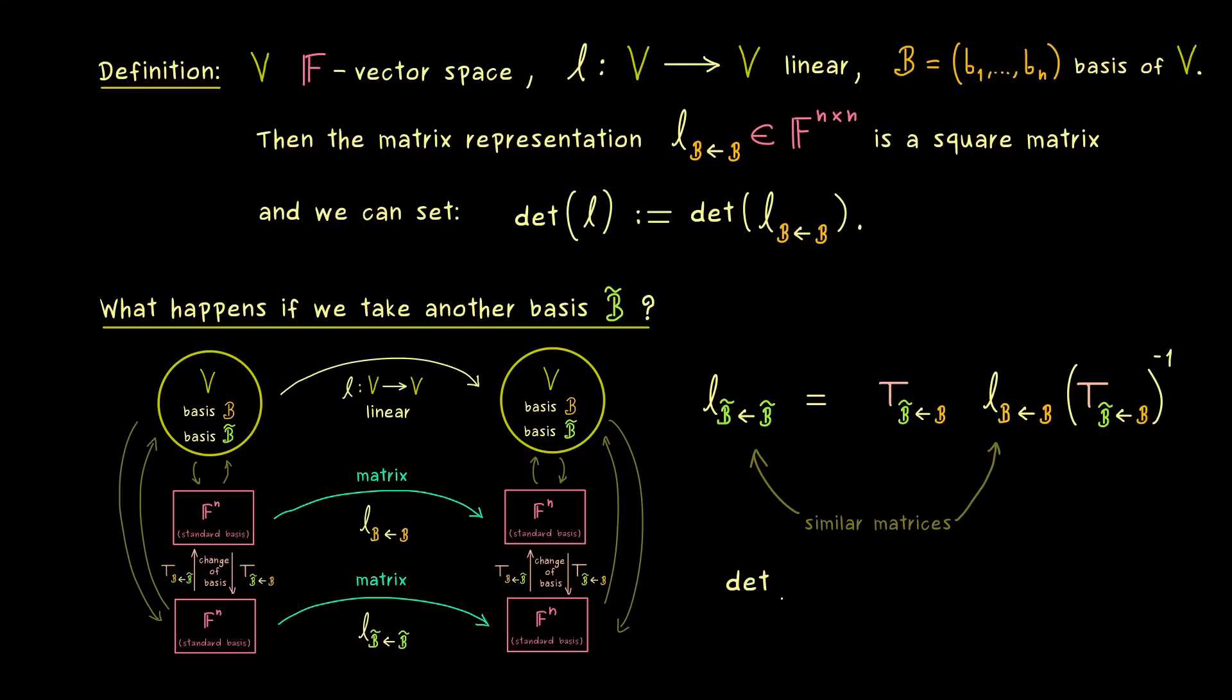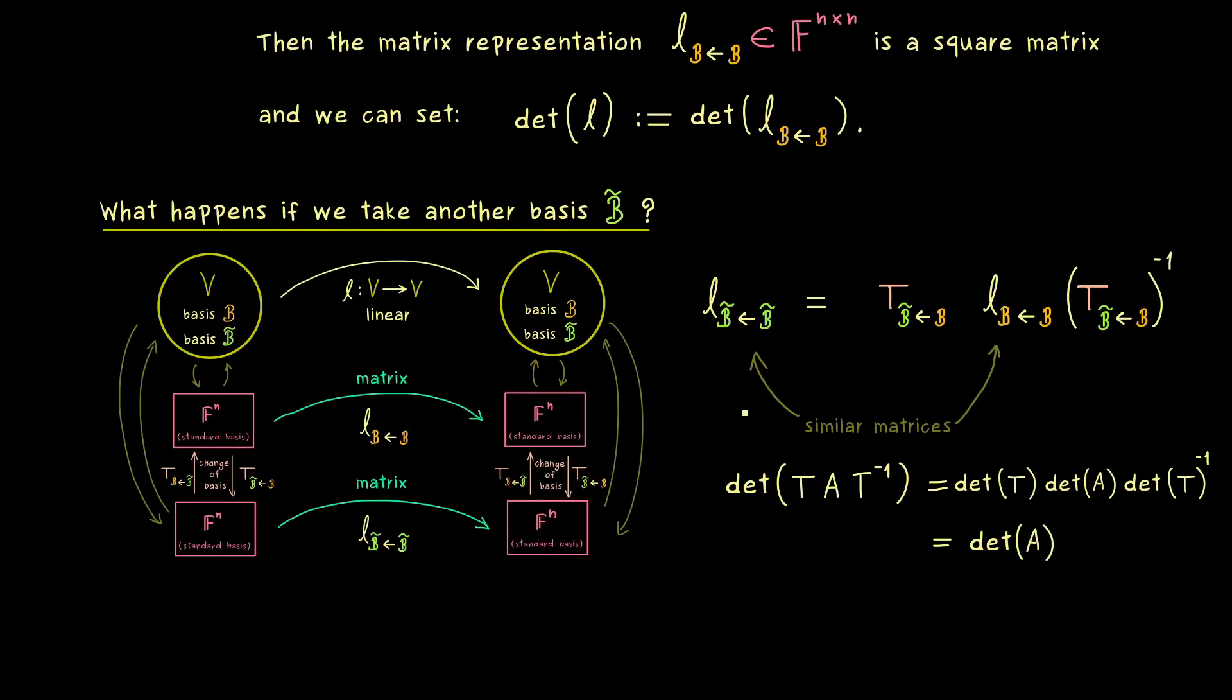Indeed, this just follows from the fact that the determinant is multiplicative. So a product of the form TAT inverse can be split up into three determinants. And the last one for T inverse can also be written as the determinant of T inverse. Therefore, this completely cancels with the determinant of T, and only the determinant of A remains. In other words, this formula already tells us that the determinant of our new matrix representation is the same as the determinant of our original matrix representation.